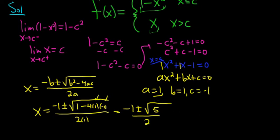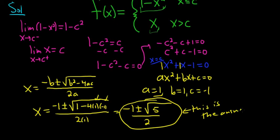So those are the values of c. This is it. These are our c's. This is the answer. So those are the values of c that will make this function continuous everywhere.